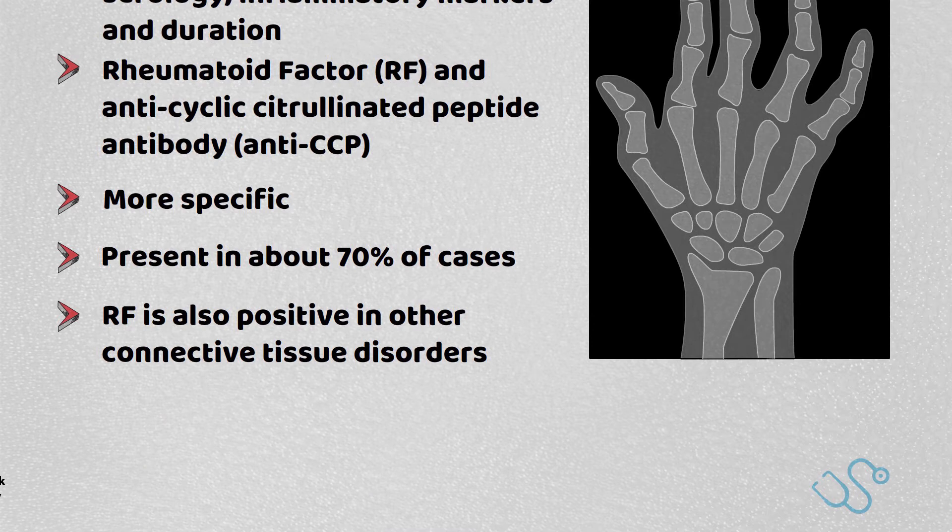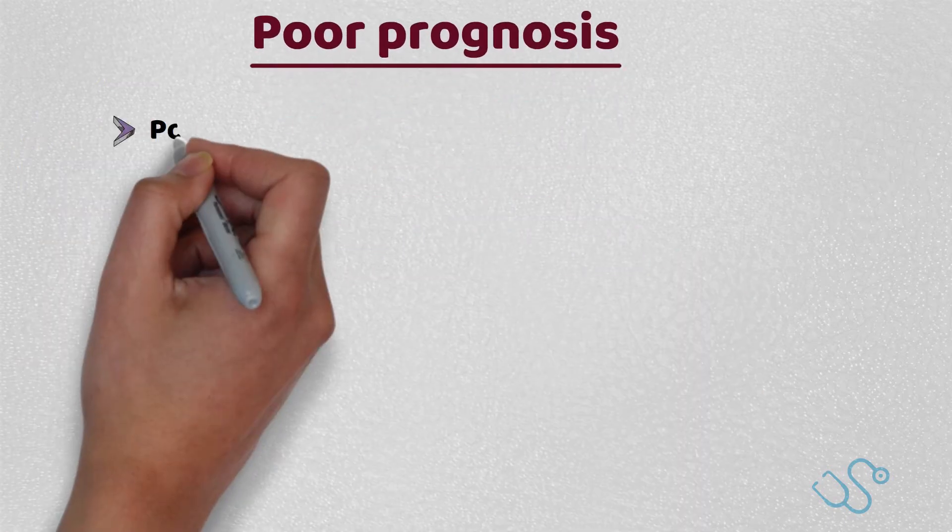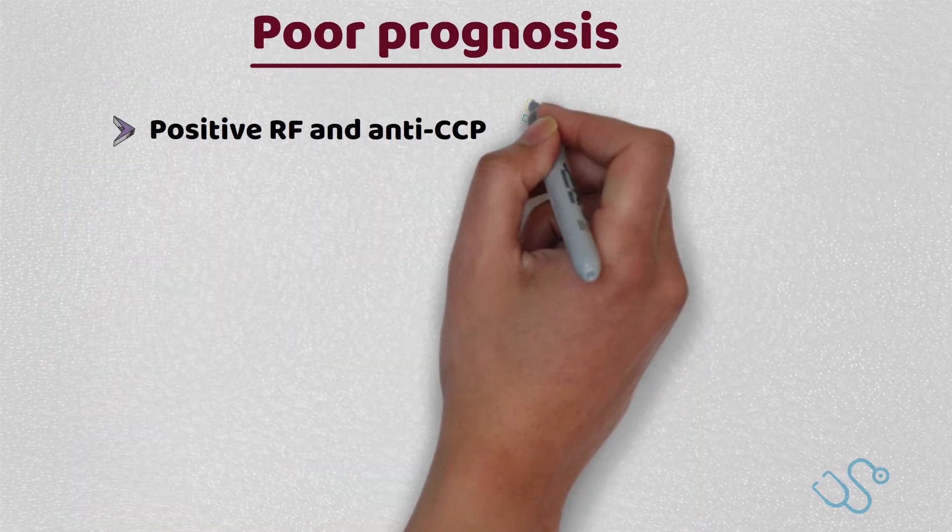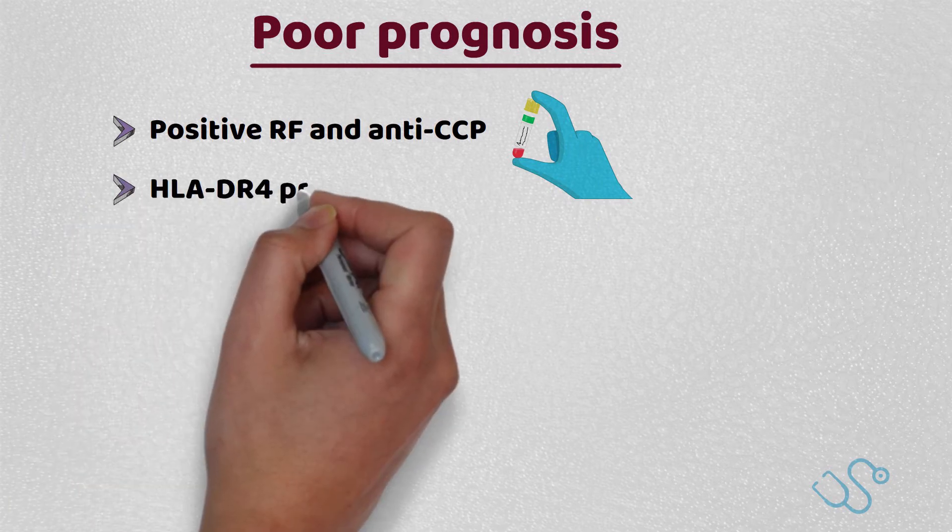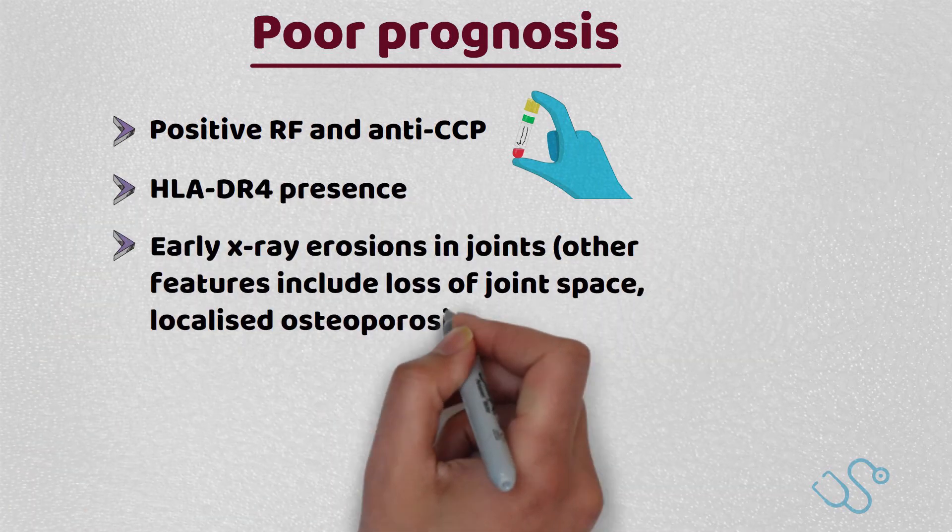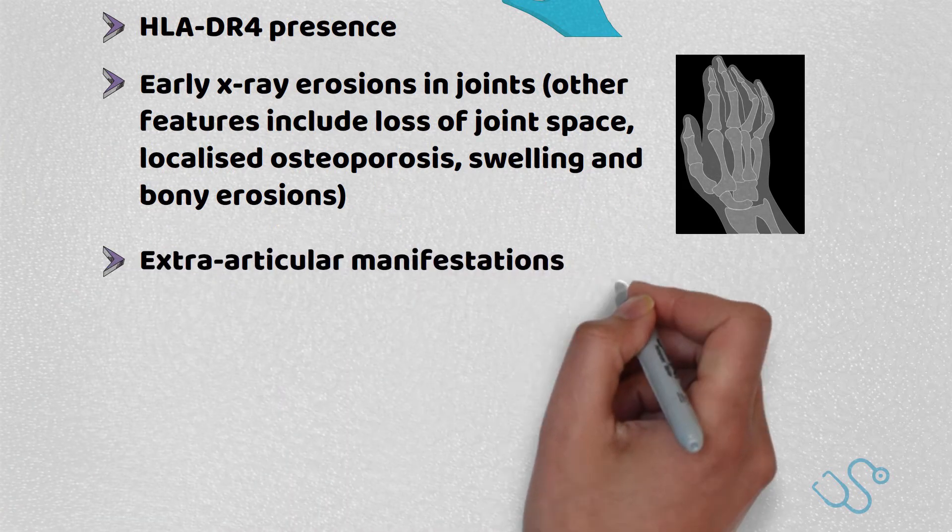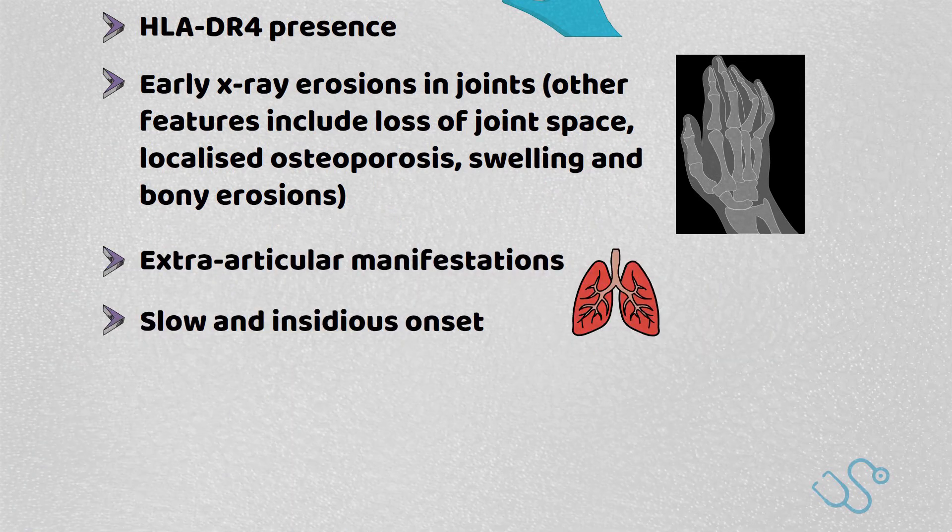There are a number of symptoms and issues which may help predict a poorer prognosis, including positive rheumatoid factor and anti-CCP, the presence of HLA-DR4, early x-ray changes such as erosions, loss of joint space, localized osteoporosis, swelling and bony erosions, extra-articular manifestations, and those with slow and insidious onset.